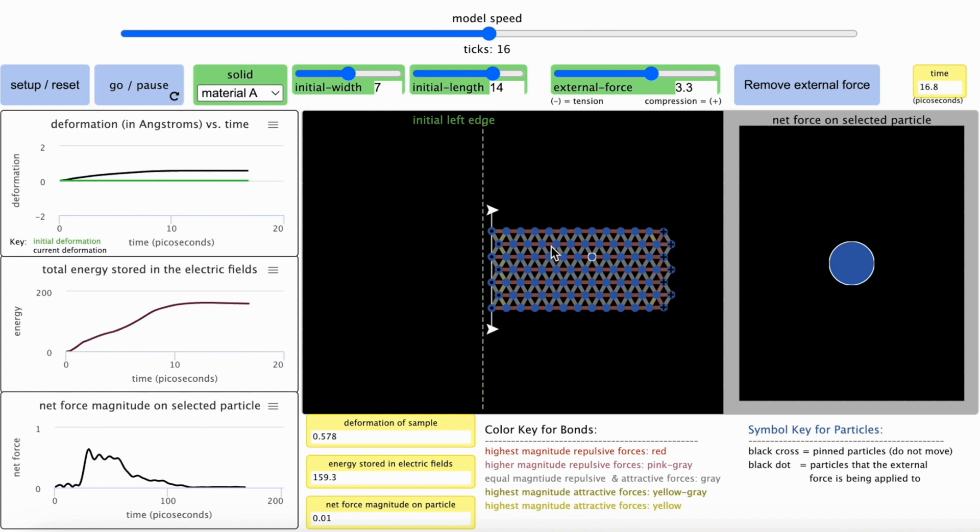At this point in time, some of the lines between the neighboring particles have turned red. This key tells us what that represents. Red is an increase in the strength of the repulsive forces between the particles. You can tell how much the solid deformed by looking at this monitor here, or this graph.